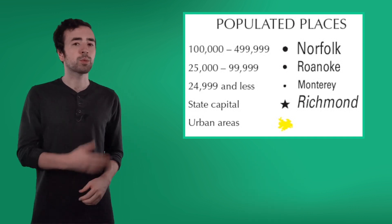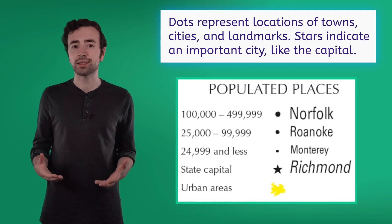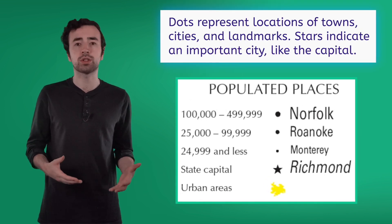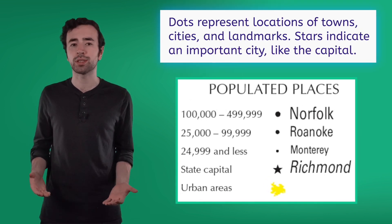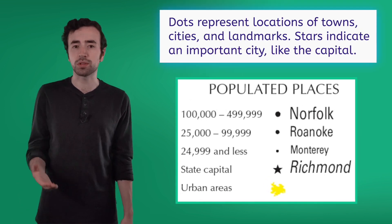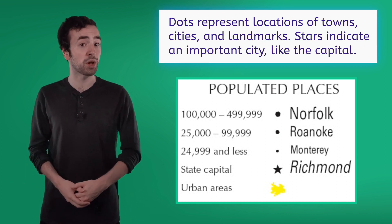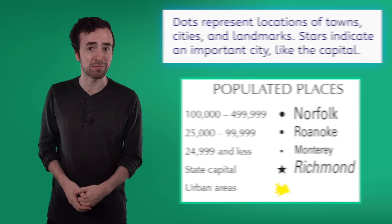First, road maps use symbols like dots and stars to mark locations. The star here represents an important city, like the capital. The capital is where the government is located.